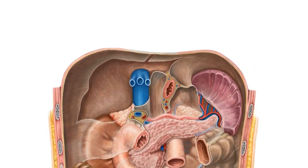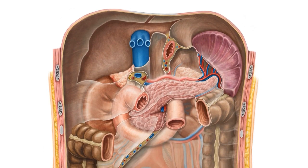Today we're going to be looking at the pancreas in situ, which essentially means we're going to be exploring this image on screen showing an interior view of the abdomen. We stripped a lot of the muscles, organs, and vessels to be left with the pancreas and some of the main surrounding structures, which we're going to be describing and discussing.